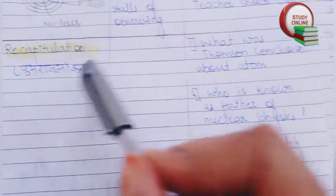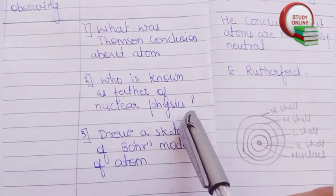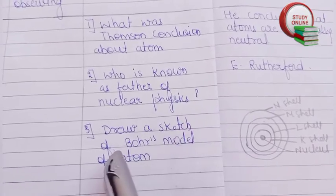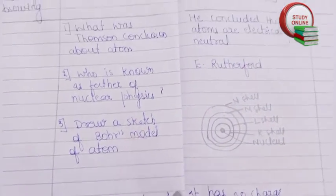After that, recapitulation: What was Thompson's conclusion about atoms? Who is the father of nuclear physics? Draw a sketch of Bohr's model of an atom. What are neutrons? Here is the expected answer.